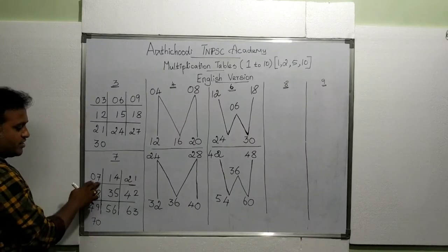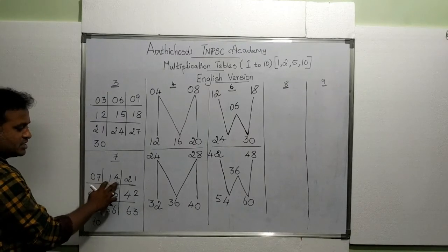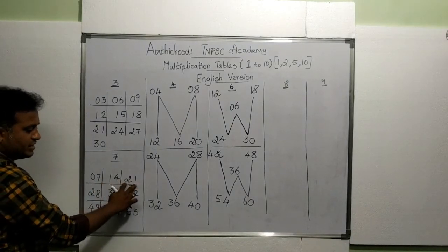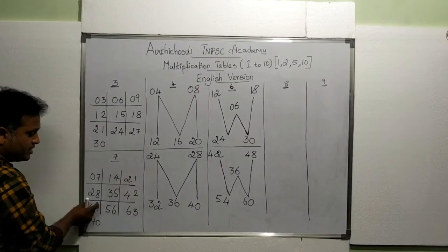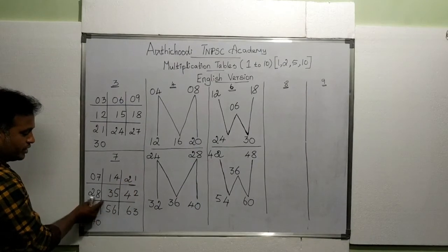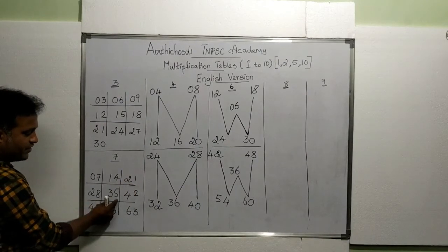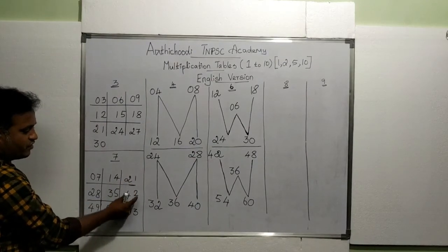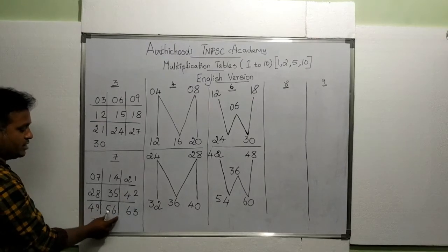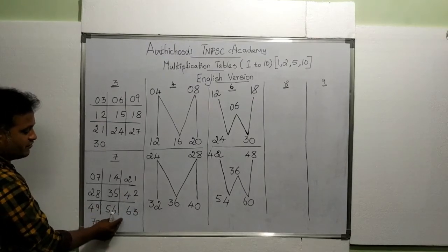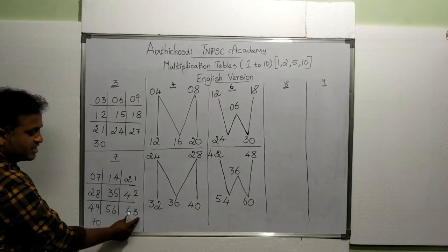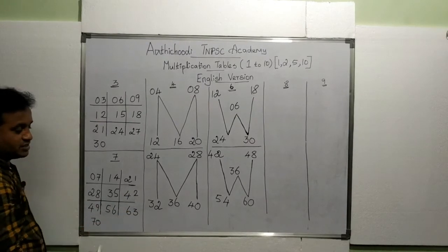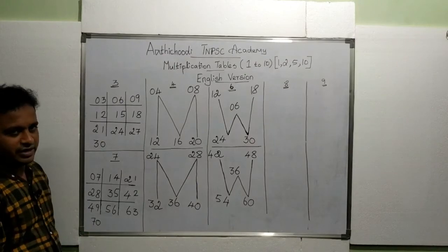Now read the seventh table: 7 ones are 7, 7 twos are 14, 7 threes are 21, 7 fours are 28, 7 fives are 35, 7 sixes are 42, 7 sevens are 49, 7 eights are 56, 7 nines are 63, 7 tens are 70.